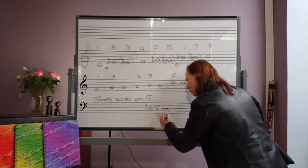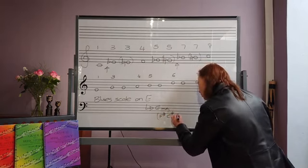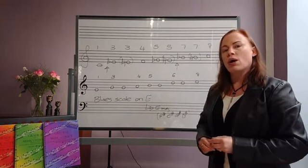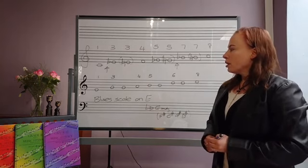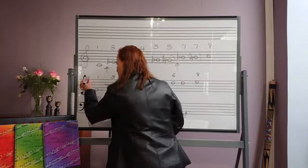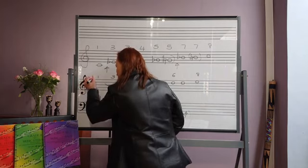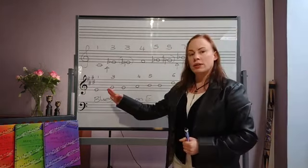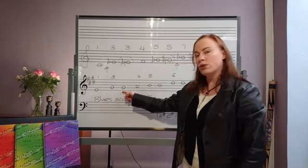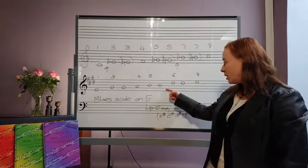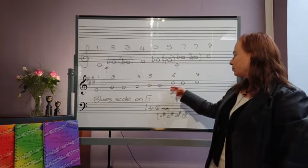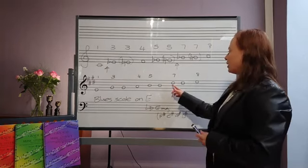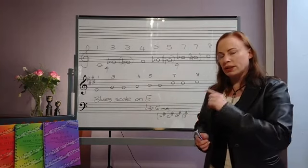The blues scale on E means I use the E major key signature, which has four sharps: F sharp, C sharp, G sharp, and D sharp. I've already written out the notes here. I have E, then I omit the second scale degree, write the third one twice, then four, five — leave out six — then seven and eight.